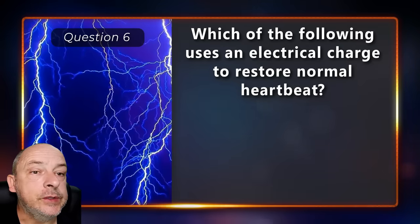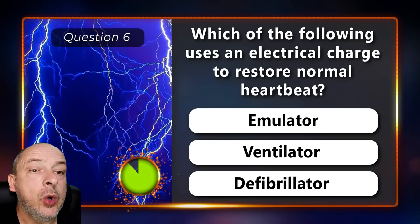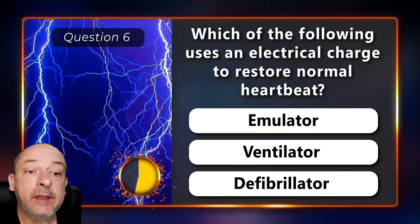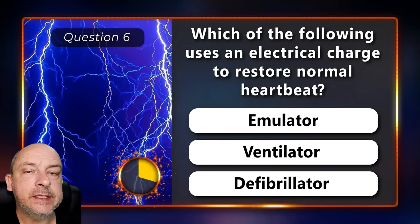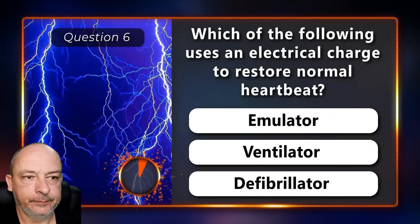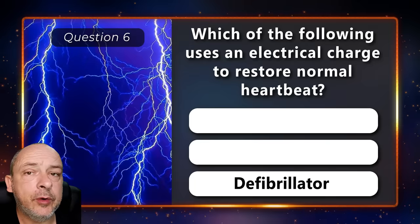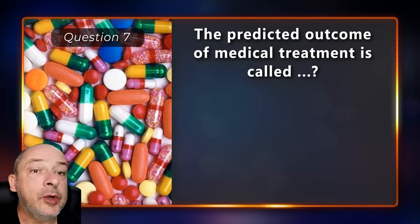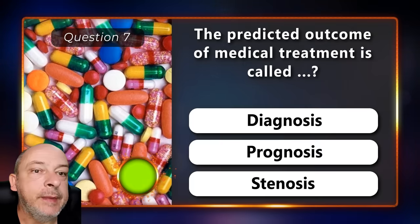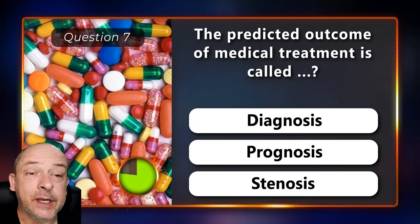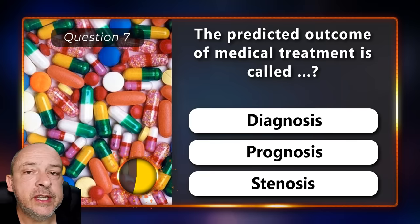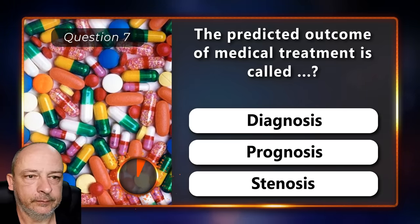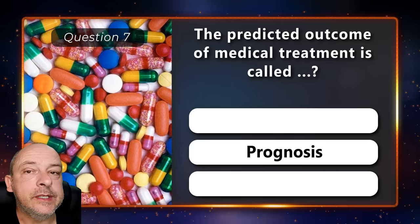Which of the following uses an electrical charge to restore a normal heartbeat — an emulator, a ventilator, or a defibrillator? A defibrillator. The predicted outcome of medical treatment is called diagnosis, prognosis, or stenosis? Prognosis.